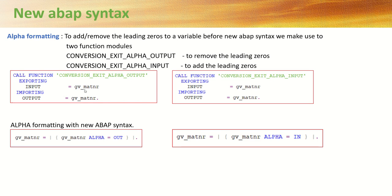For example, if our material length is 18 characters and we are storing only a 10-digit number, the remaining eight characters are leading zeros. When working with a text file, Excel file, or an integration project, or when displaying messages, based on our requirement we make use of those function modules. To remove the zeros we use conversion_exit_alpha_output, passing the input variable and the output variable, which can be the same or different. The same applies for conversion_exit_alpha_input. Before 7.4 we used these function modules.